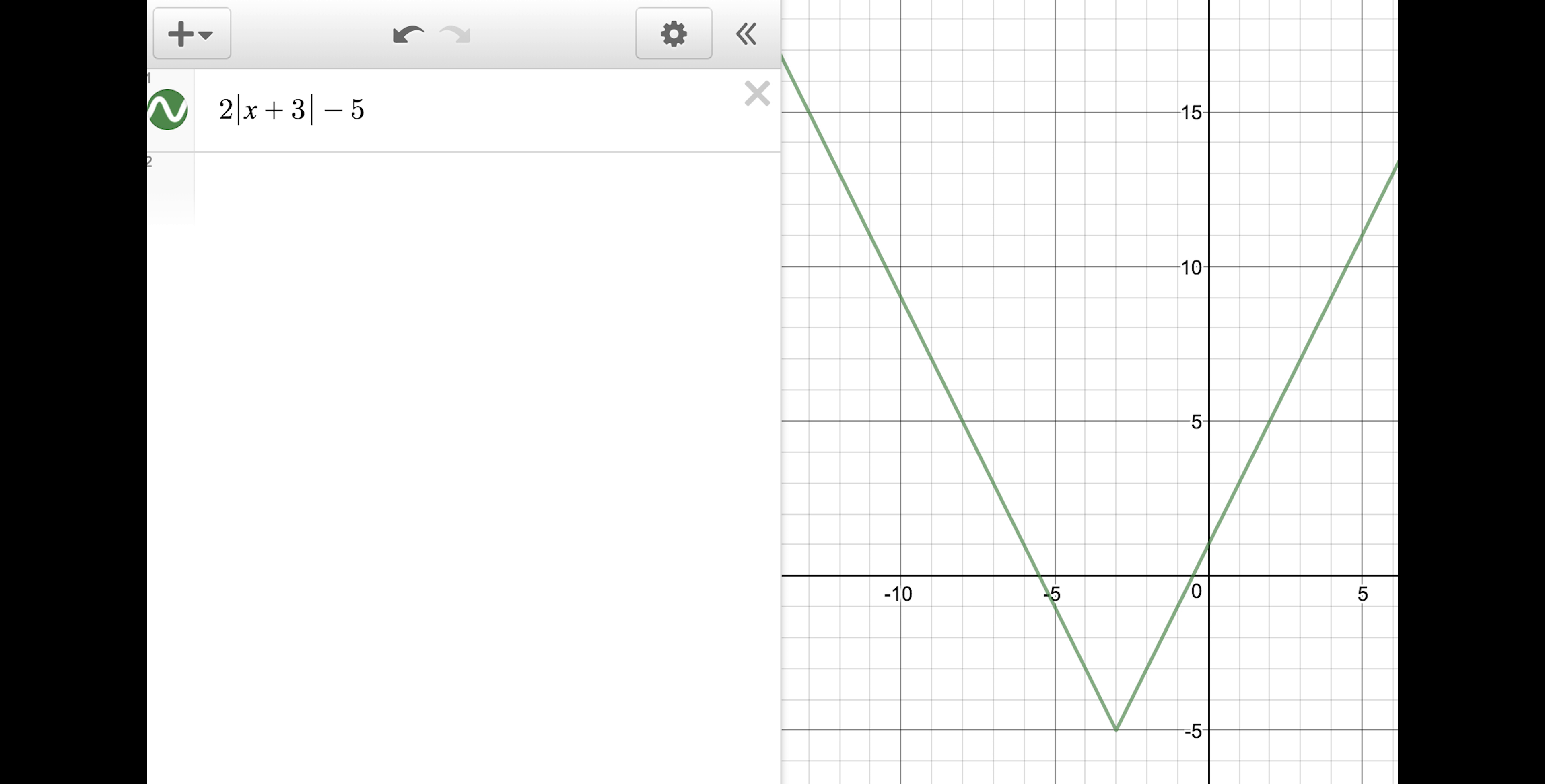For example, in the function 2, absolute value of x plus 3 minus 5, 2 is the vertical stretch. On a table, you'd multiply y by 2 to get the stretch.